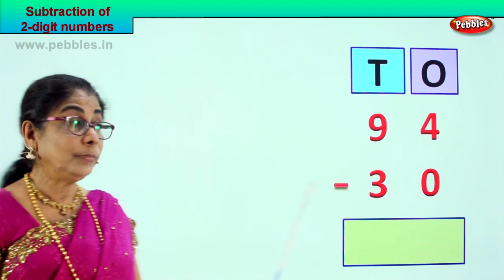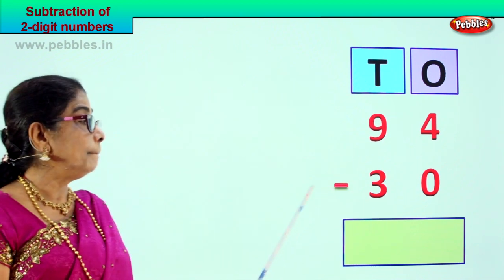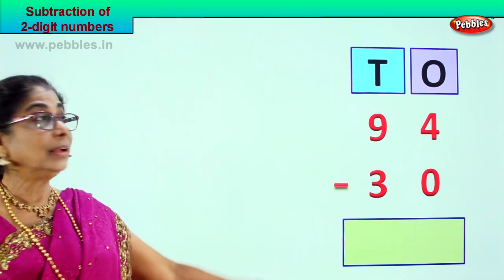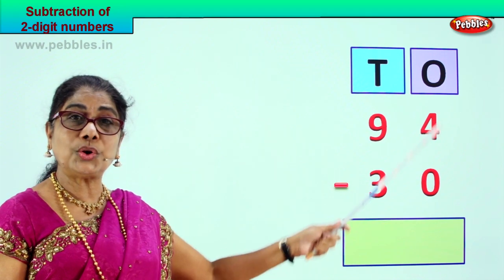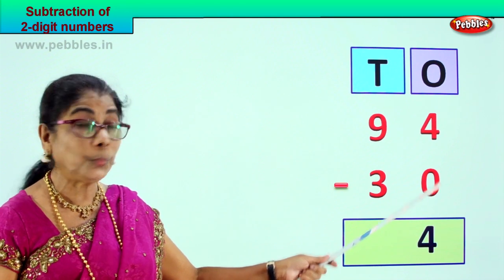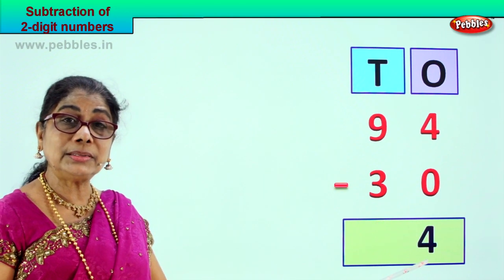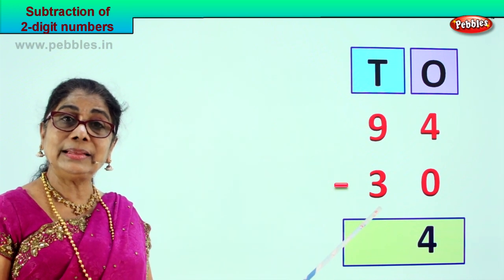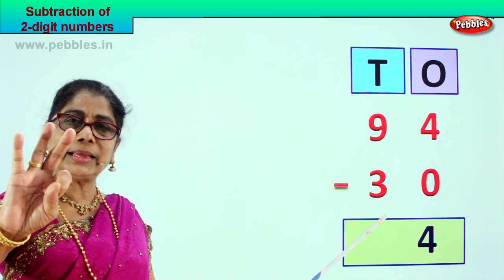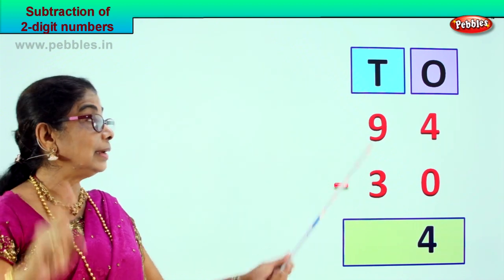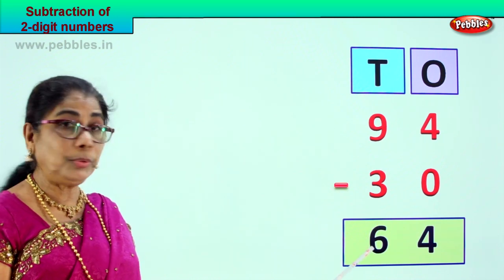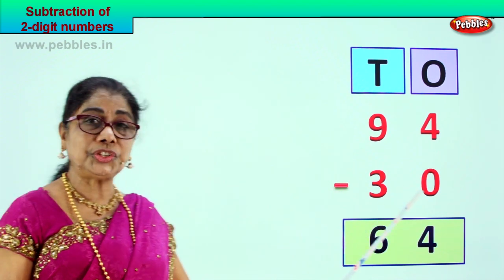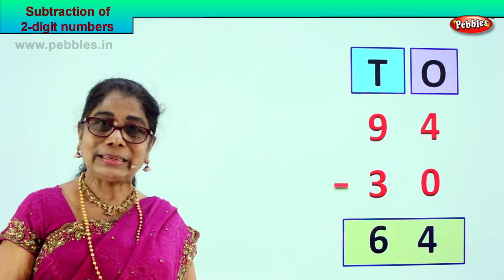Let us take a new sum. 94 take away 30 — 94 minus 30. Nine tens, four ones, three tens, zero ones. Go to the ones please: four minus zero, four take away zero, your answer is four itself. Tens place: nine take away three — three, four, five, six, seven, eight, nine — nine minus three is six. So 64 is your answer. 94 minus 30, your answer is 64.